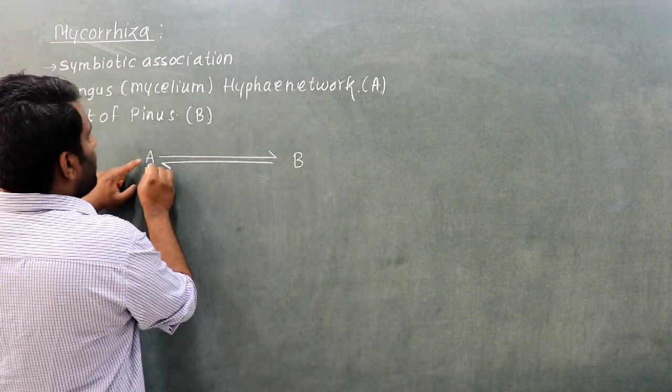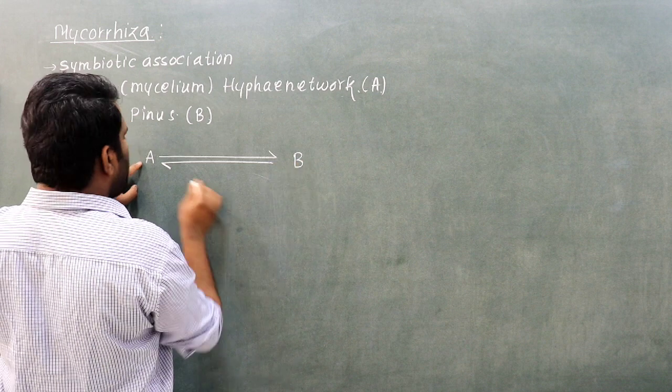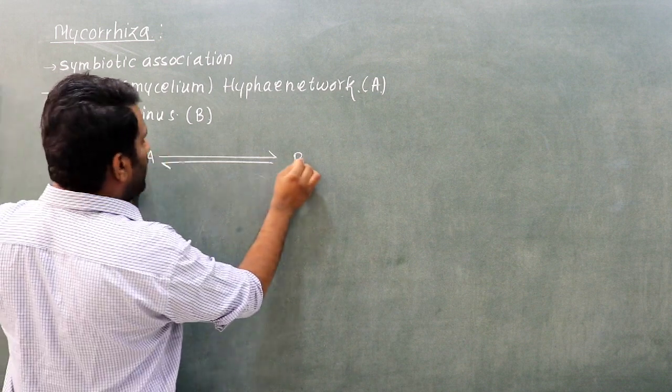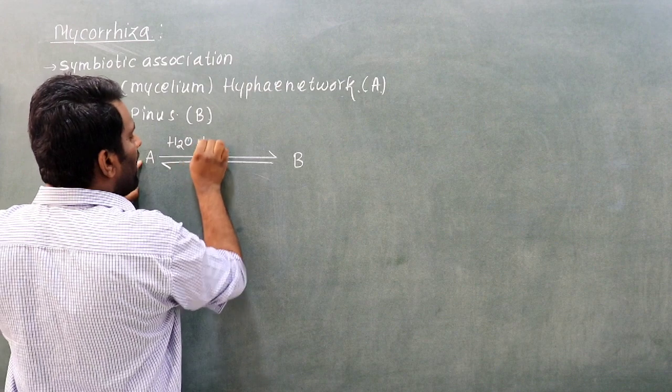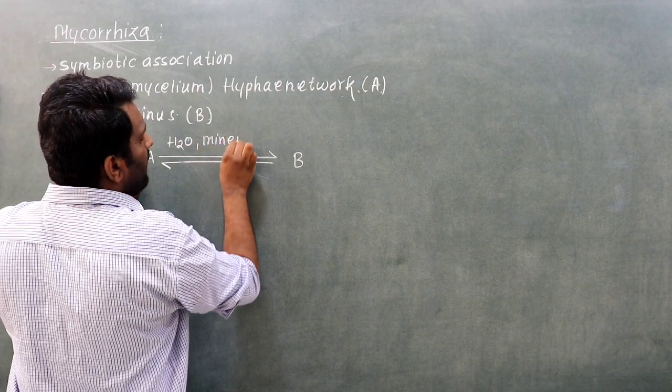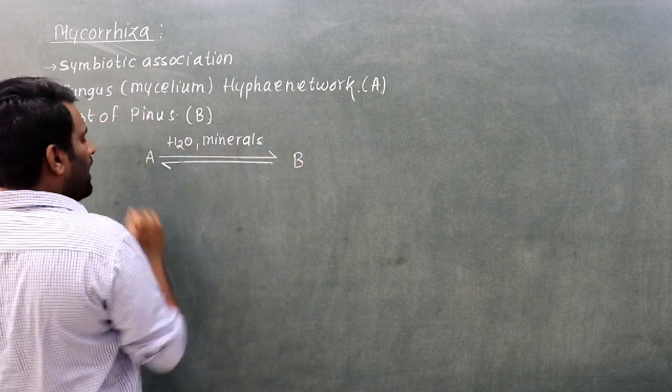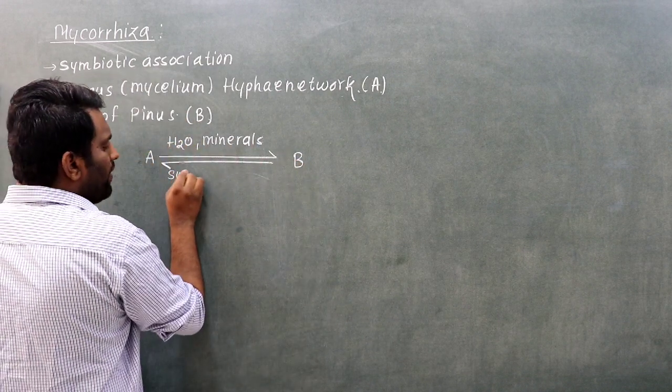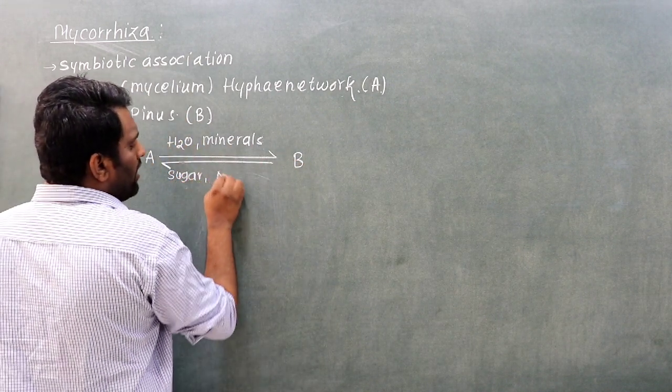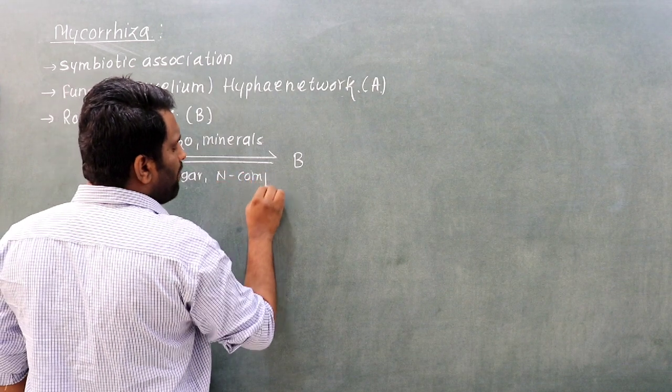Organism A would provide water and minerals, and organism B would provide sugars and nitrogen-containing compounds. In this two-part relationship, there is a symbiotic relationship.